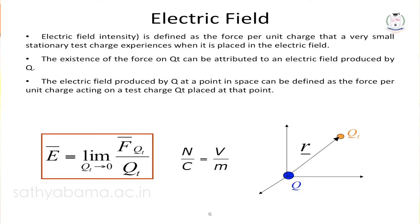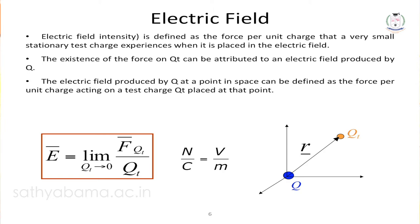Electric field intensity is defined as force per charge. The unit of force is Newton and charge is Coulomb, so electric field intensity is Newton per Coulomb. Considering a test charge QT, E equals Q·QT divided by 4πε r² divided by QT, so QT cancels out. The electric field intensity formula is E = Q / (4πε r²). Here, epsilon (ε) is permittivity — the ability to allow charges in a medium.